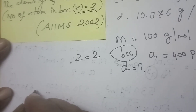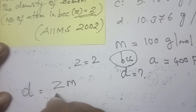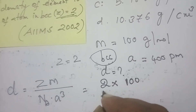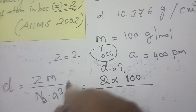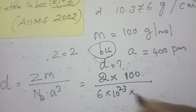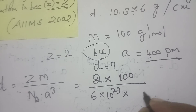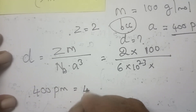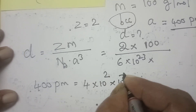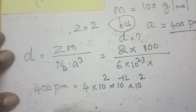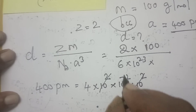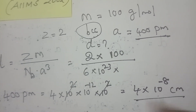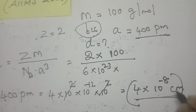The formula is: density = ZM / (Nₐ × A³). Substituting: Z=2, M=100 gram per mole, Nₐ = 6×10²³. Edge length A = 400 picometer needs to be converted to centimeter. 400 picometer = 4×10² × 10⁻¹² × 10² centimeter = 4×10⁻⁸ centimeter. So A³ = (4×10⁻⁸)³ = 64×10⁻²⁴ centimeter³.